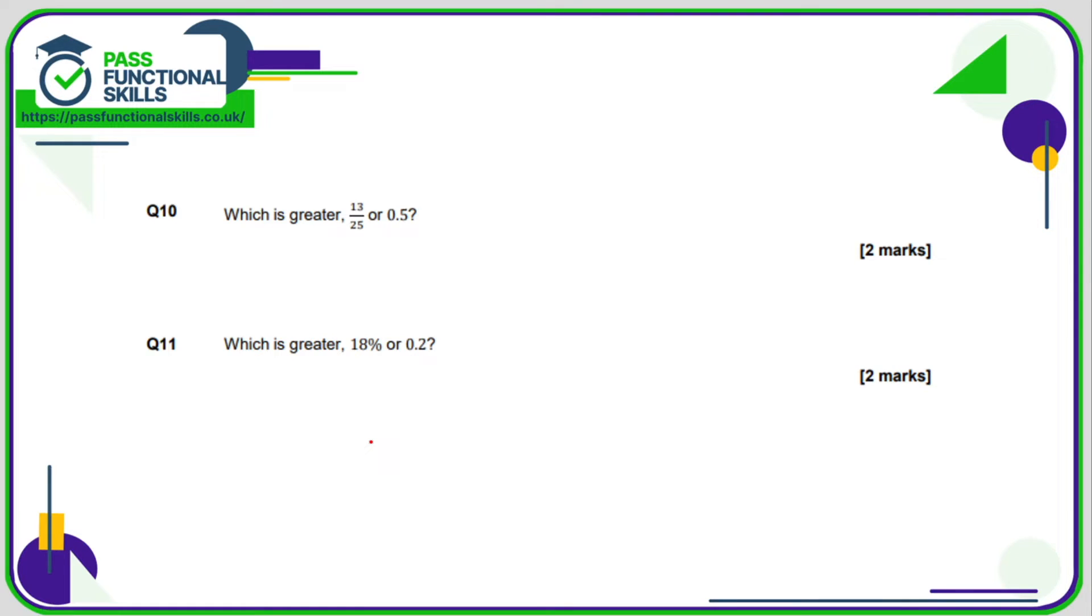Question number 10. Which is greater, 13 out of 25 or 0.5? My recommendation would be to convert both of these into percentages. 0.5 is a decimal so multiply it by 100 gives us 50%. 13 out of 25, let's convert this into a percentage. So remember a percentage is a fraction out of 100. Percent means out of 100. So what we're doing is converting 13/25 into an equivalent fraction out of 100. Now to turn a 25 into 100 we're multiplying by 4.